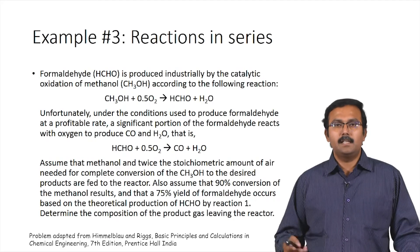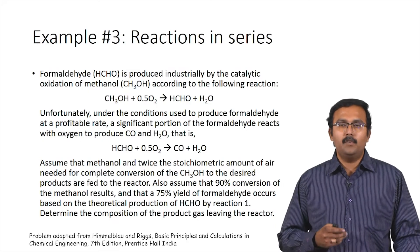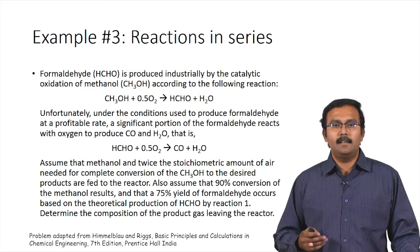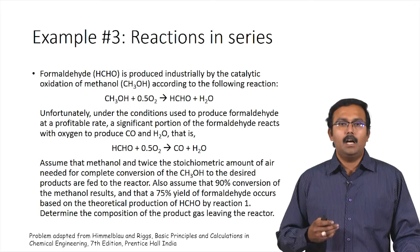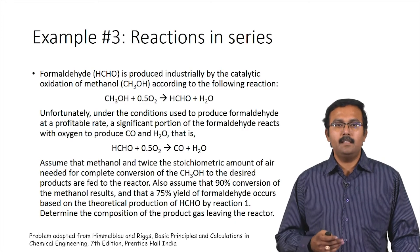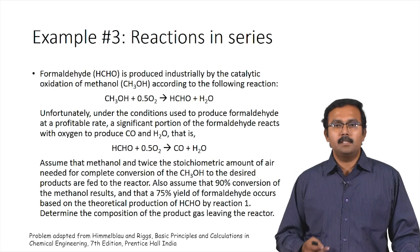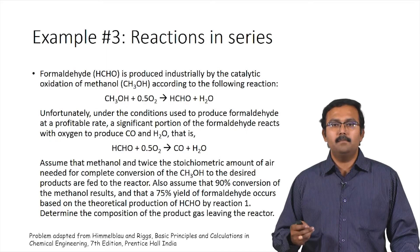Now let us move on to an example problem where reactions are happening in series. Formaldehyde is produced industrially by catalytic oxidation of methanol. Methanol reacts with oxygen to form formaldehyde and water. Unfortunately, under the conditions used to produce formaldehyde at a profitable rate, a significant portion of formaldehyde reacts with oxygen to produce carbon monoxide and water. Assume that methanol and twice the stoichiometric amount of air needed for complete conversion of methanol to the desired product are fed to the reactor, that 90% conversion of methanol results, and that 75% yield of formaldehyde occurs based on the theoretical production of formaldehyde by reaction 1.